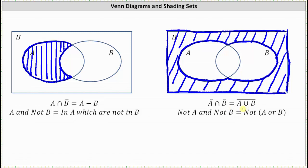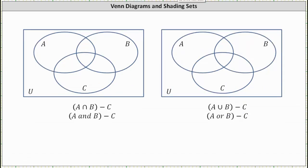Now let's look at two examples with three sets. First, on the left we have A intersect B minus C, which is the set of elements that are in A and B but not in C. Let's first shade the region that represents A intersect B — this region here. But since we have A intersect B minus C, we want the elements in that region but not in C, which leaves us with this small region here.